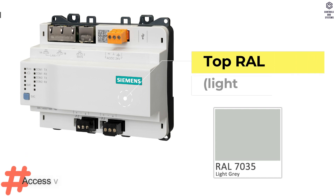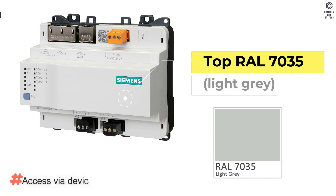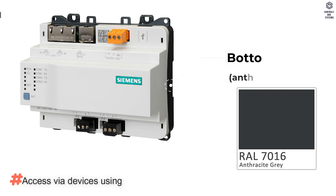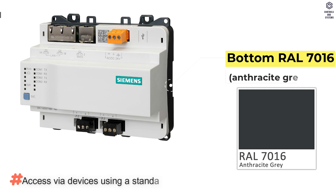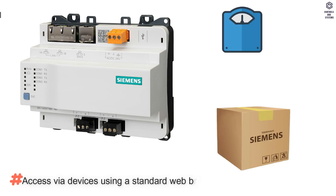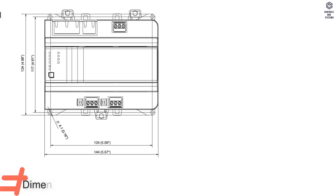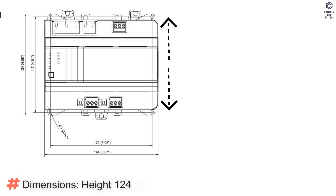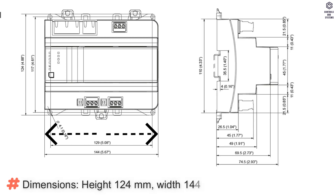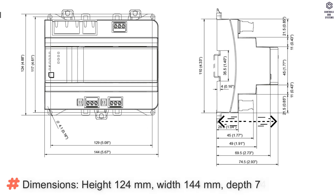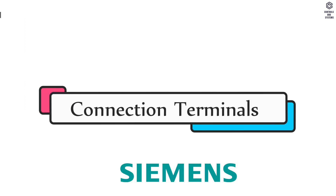seven days. Color: top is RAL 7035 light gray, bottom is RAL 7016 anthracite gray. Weight with packaging is 350 grams, without packaging is 300 grams. Dimensions: height 124 mm, width 144 mm, depth 74.5 mm.